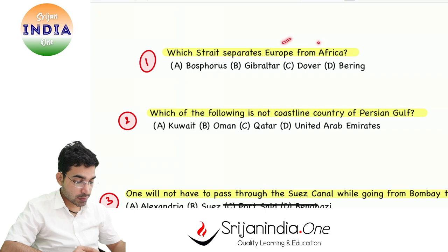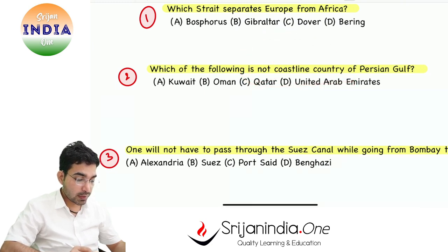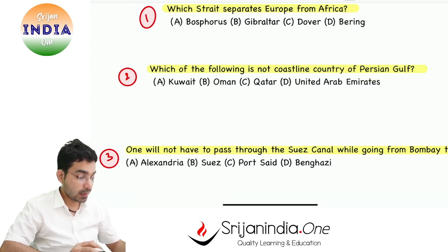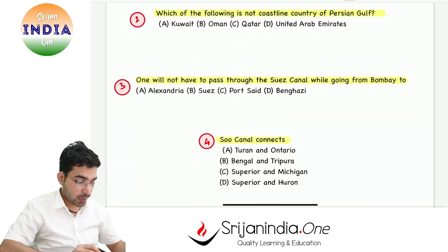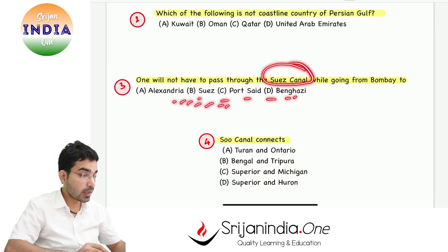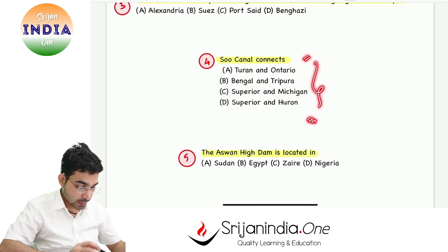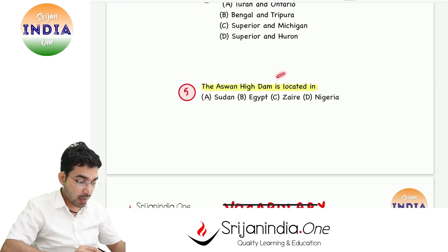Which of the following is not a coastline country of the Persian Gulf? One will not have to pass through the Suez Canal while going from Bombay to which country? The Suez Canal connects which two water bodies? And the Aswan High Dam is located in which country?